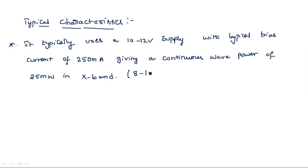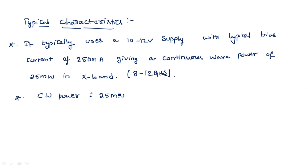The X-band range is 8 to 12 gigahertz. The continuous wave (CW) power output can vary from 25 milliwatts to 250 milliwatts in the X-band.